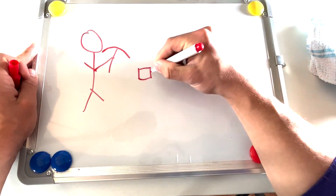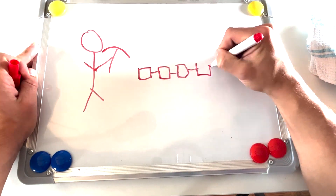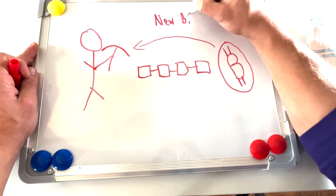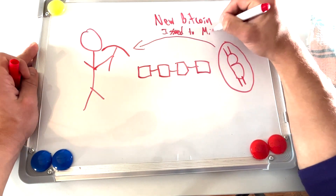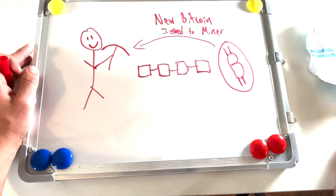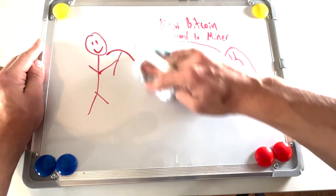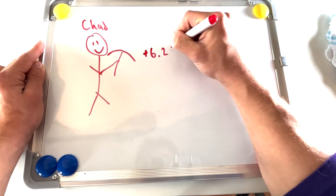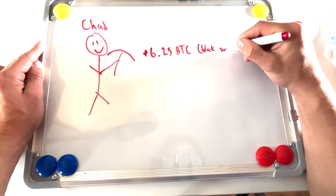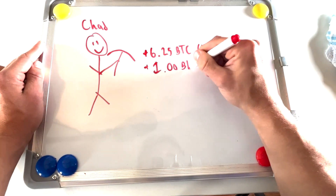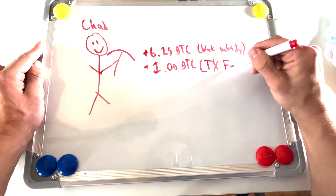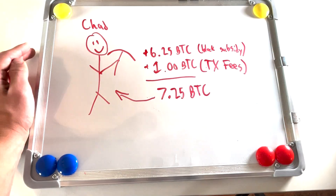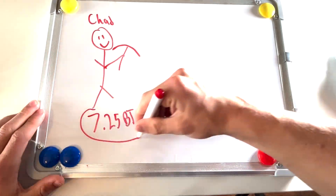Bitcoin enters circulation through Bitcoin mining. Miners that mine a new block are able to add a transaction that sends them a certain amount of newly created Bitcoin in accordance with the halving supply schedule. To illustrate this, here's our miner — let's call him Chad. Chad just mined a Bitcoin block and received the 6.25 BTC block subsidy, plus one BTC worth of transaction fees. So Chad just received 7.25 BTC in total. This is Chad's UTXO.